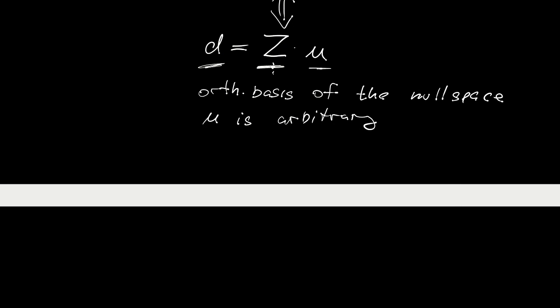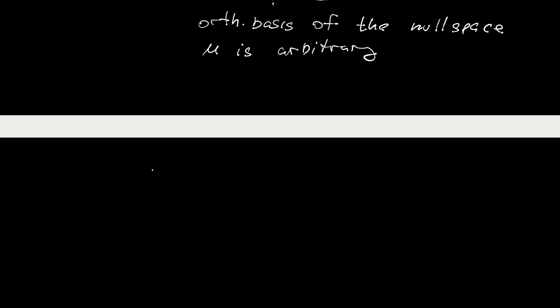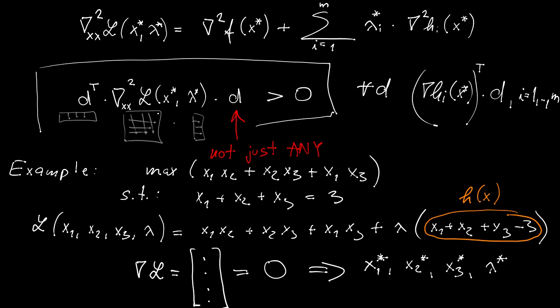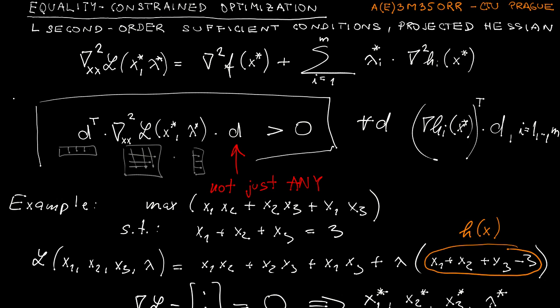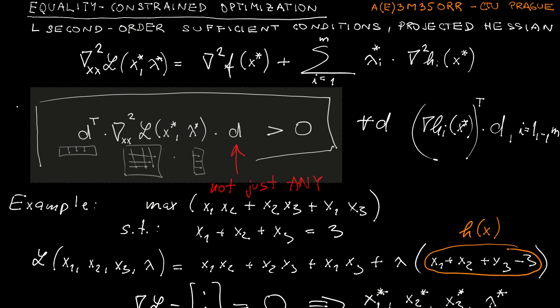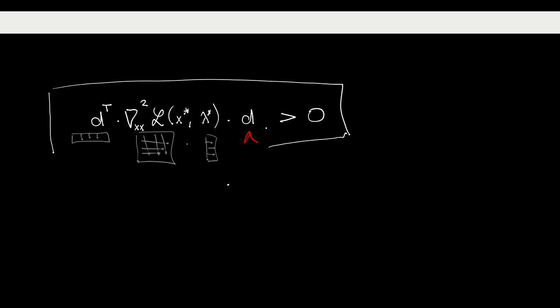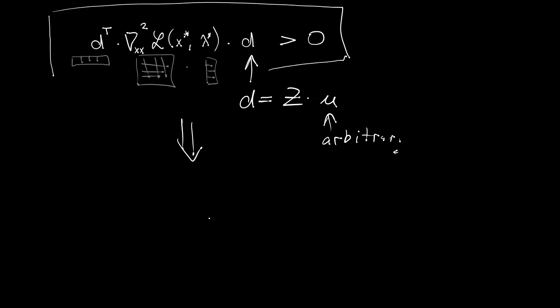So now, once we have it, we can replace—where do we have the condition? Over here. So let me now just copy this. As you can see here, we can just replace these D by Z times U. Now, U is arbitrary, as we have just mentioned.